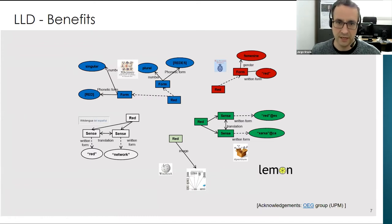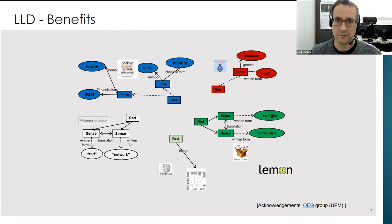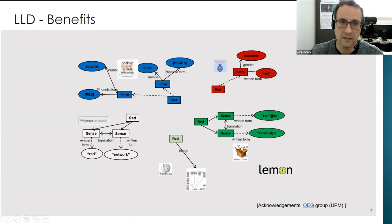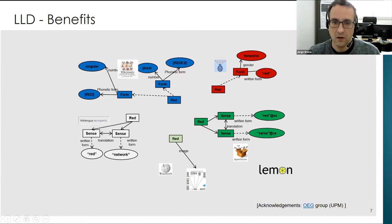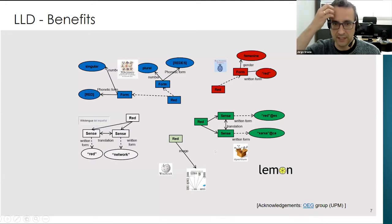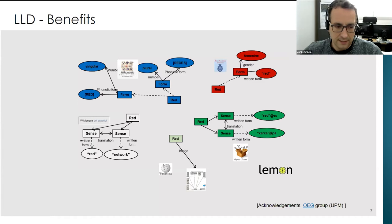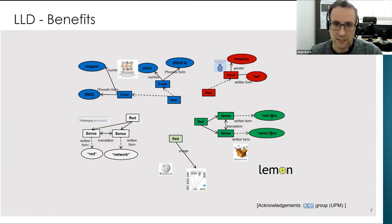Let's imagine the entry 'red', meaning 'network' in Spanish, and imagine that we have several language resources describing this term scattered on the web with different types of information. For instance, the Royal Academy of Spanish would have gender and written form; other sources like Wiktionario would have phonetic form; there would be translations in Apertium; and in Wikipedia you can access other information, images, or associated data. If we imagine this information is represented following practices of the semantic web, following a common model such as lemon, and published as linked data...